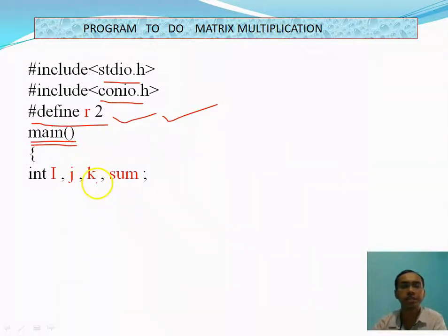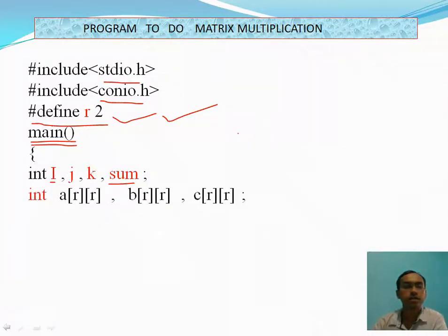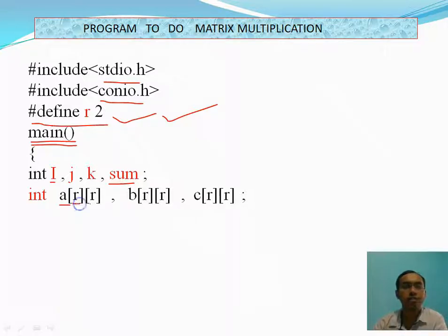We are taking some variables i, j, and k, and also a variable for the sum. We are taking integer array variable A where r is the number of rows and the second r is for columns. Again we are taking matrix A, matrix B, and there is a matrix C.